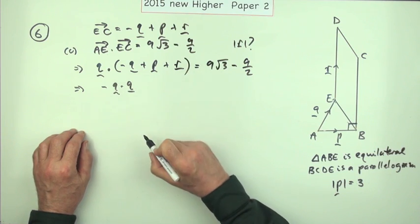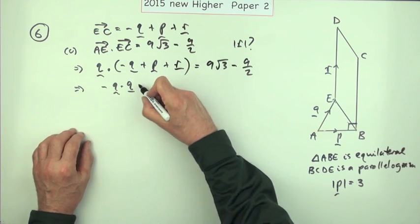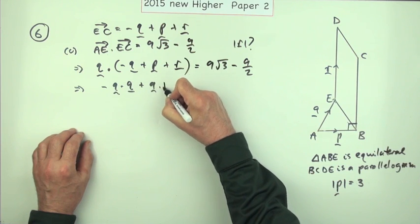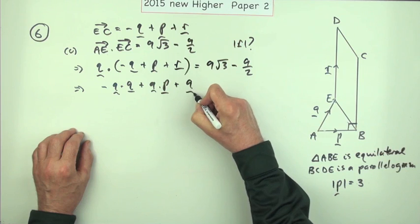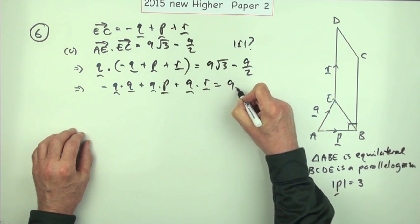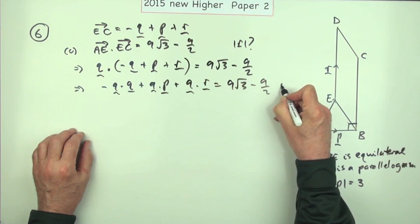But you'd be doing that anyway. So it's negative q dot q, you could jump in with q squared that's in just the length times the length, plus q dot p which you've worked out already, plus q dot r should come to 9 root 3 minus 9 over 2. That seems to be the first mark.